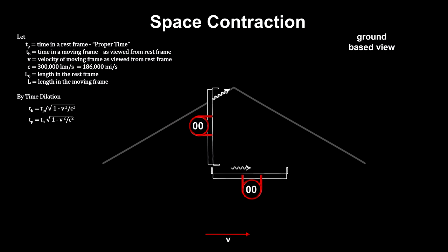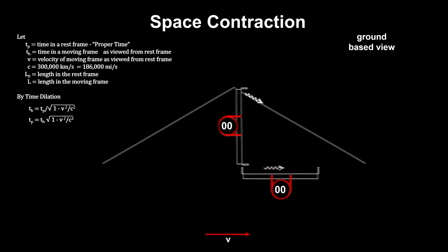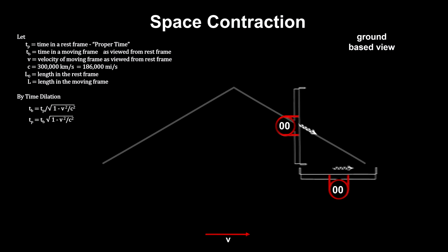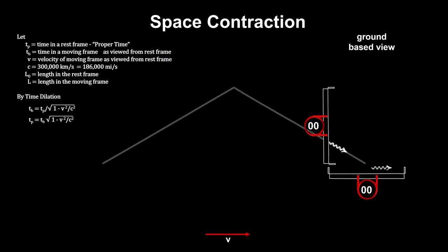But the motion of the horizontal clock's mirror makes the distance the light has to travel different from the distance the light travels in the perpendicular clock.